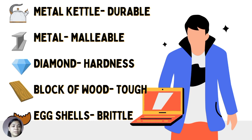To recap: a metal kettle is durable, metals are malleable, diamond's property is hardness, block of wood is tough, and eggshells are brittle.